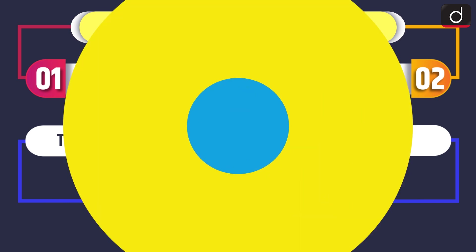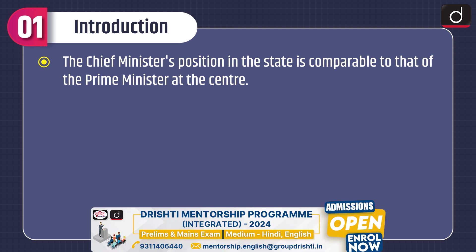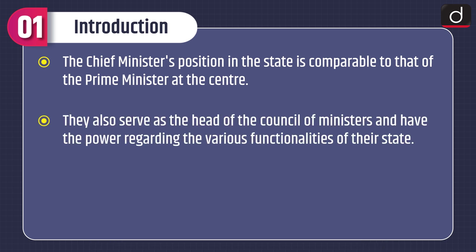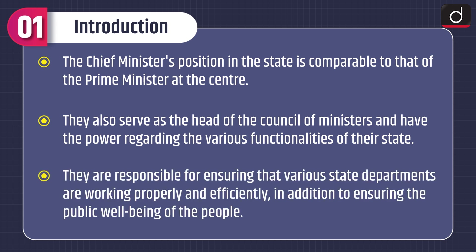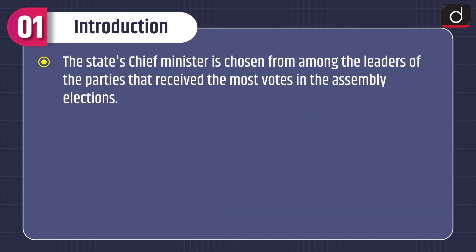Moving on to the introduction, the Chief Minister's position in the state is comparable to that of the Prime Minister at the center. They serve as the head of the council of ministers and have powers regarding various functionalities of their state. They are responsible for ensuring that various state departments are working properly and efficiently, in addition to ensuring the public well-being of the people. The state's Chief Minister is chosen from among the leaders of the parties that received the most votes in the assembly elections.